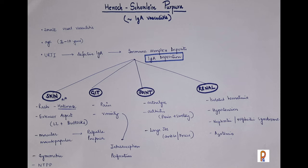The most commonly affected age group is between 3 to 10 years, although it may affect any age. Usually URTI — that is upper respiratory tract infection — triggers the disease, and it occurs because of IgA deposition in the different organs.